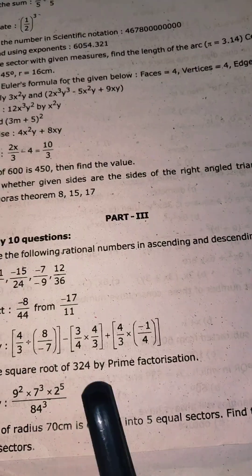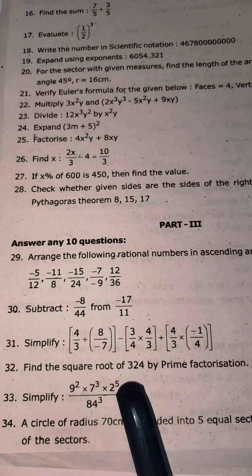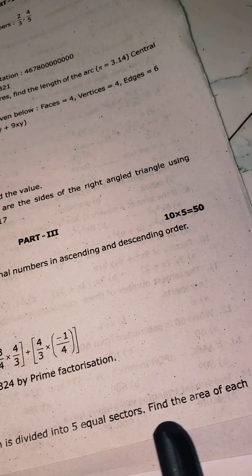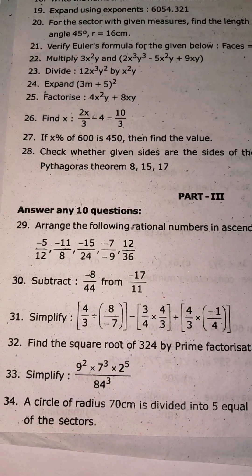Find the square root 324 by prime factorization. Let's simplify the question. Let's look at the circle, the radius, 7 cm divided into 5 equal sectors. Find the area of each of the sectors.